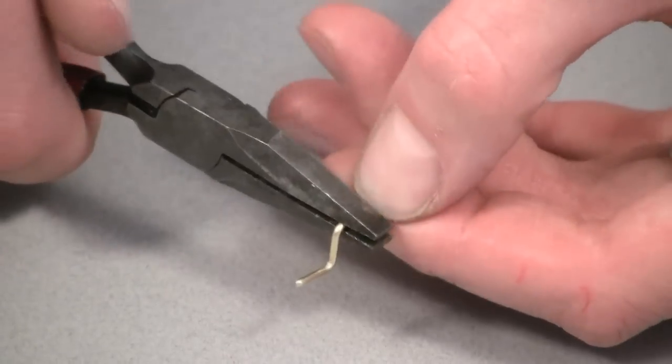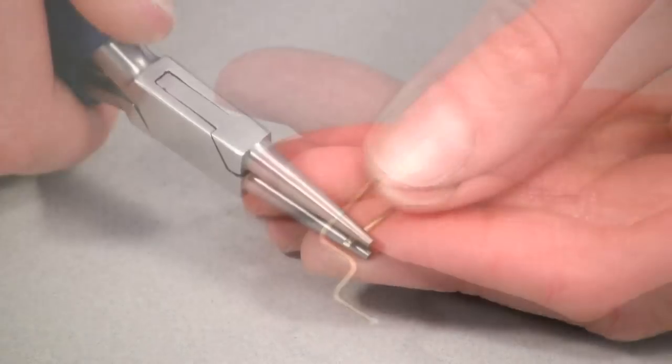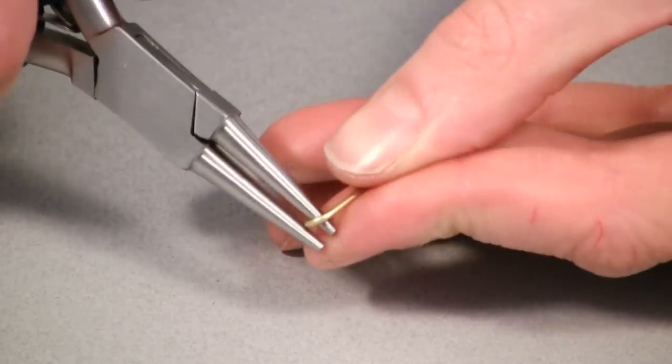Pliers are also used for bending the brass rods that we use in a lot of our projects. Flat nose pliers are good for square bends, while round nose pliers can be used to make hooks and eyes.